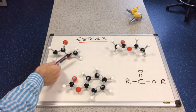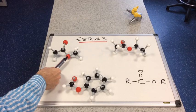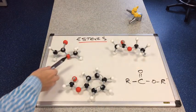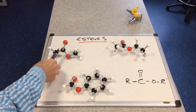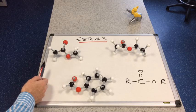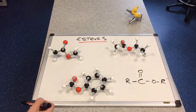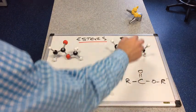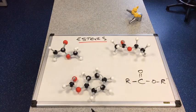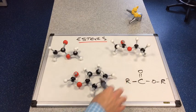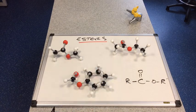When naming esters, we look at the R group attached to the single-bonded oxygen. In the way these esters are positioned, that's on the right-hand side. The first has a methyl group, and counting the other part gives us methyl ethanoate. The second has an ethyl group — ethyl ethanoate. The third has a benzene ring missing a hydrogen, which is a phenyl group — phenyl methanoate.